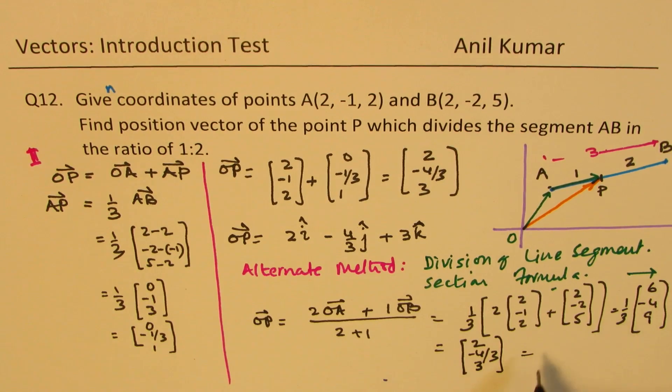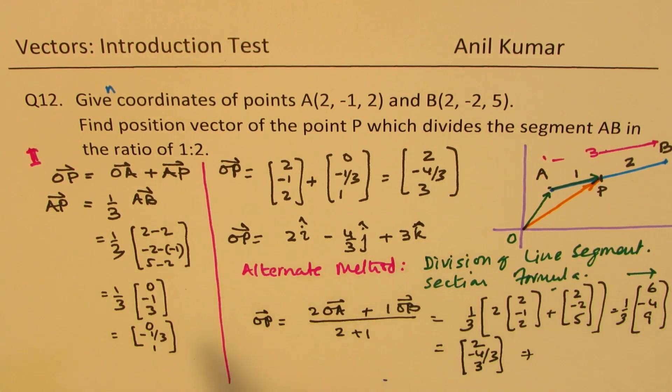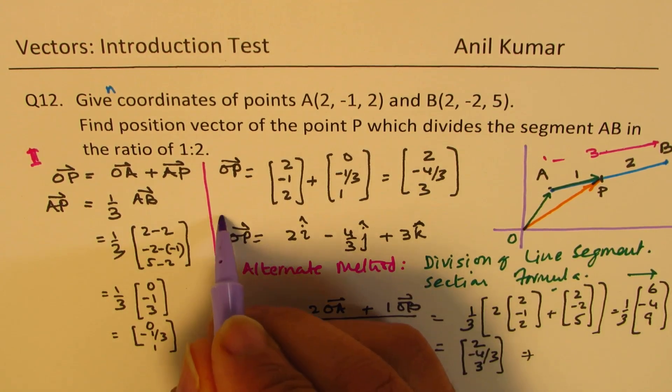You get the same result, which is 6 divided by 3 is 2, minus 4 over 3, and 9 divided by 3 is 3. You get the same result which we got earlier. That is how you could do it.